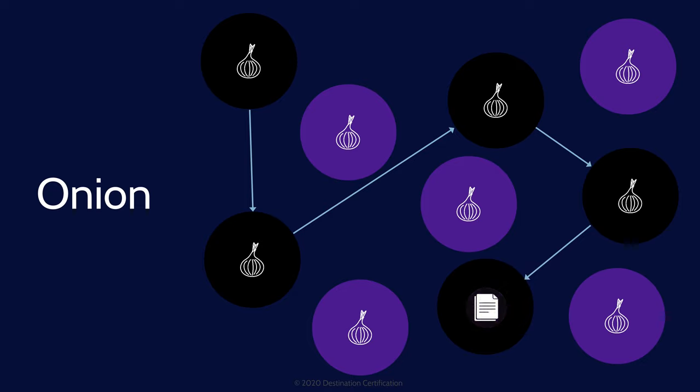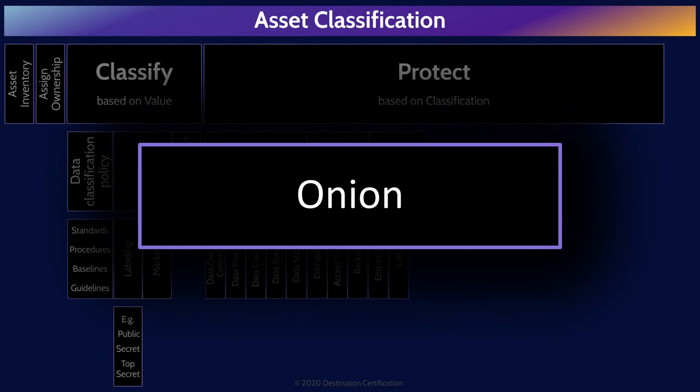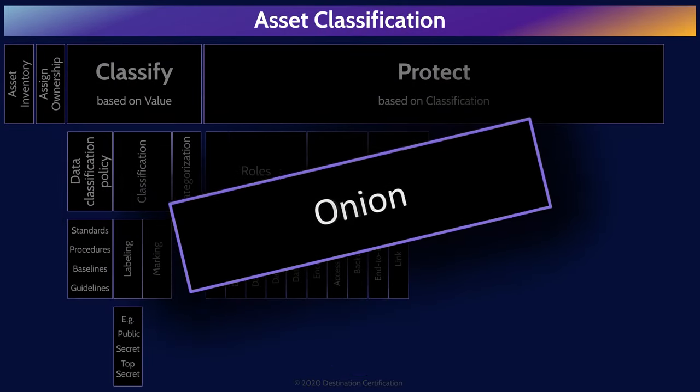The big advantage is that each node along the way only knows which node the packet came from and the next node — but not the ultimate source and destination. Each node has zero access to the encrypted data within the innermost layer. A perfect example of an onion network is Tor, the onion router. The big downside, of course, is performance.